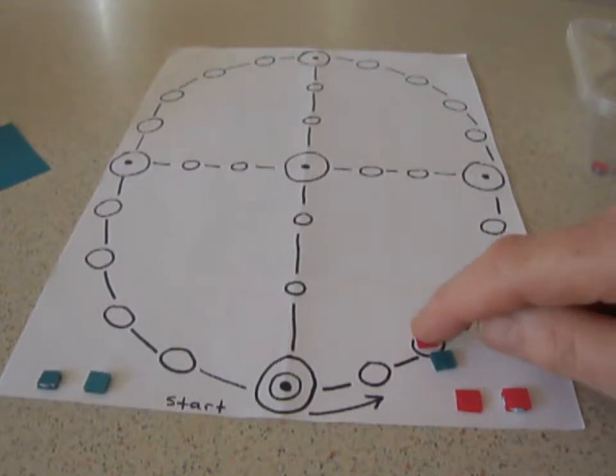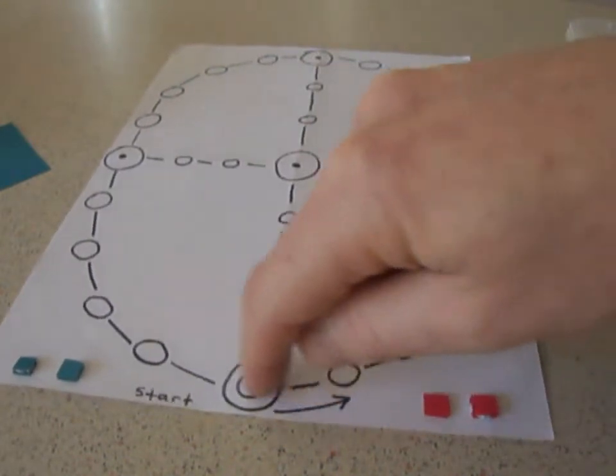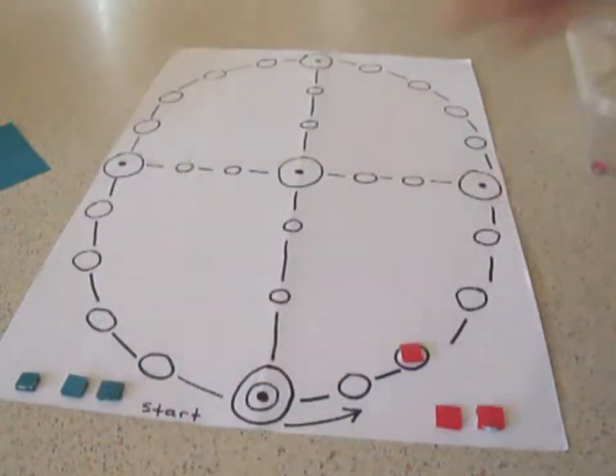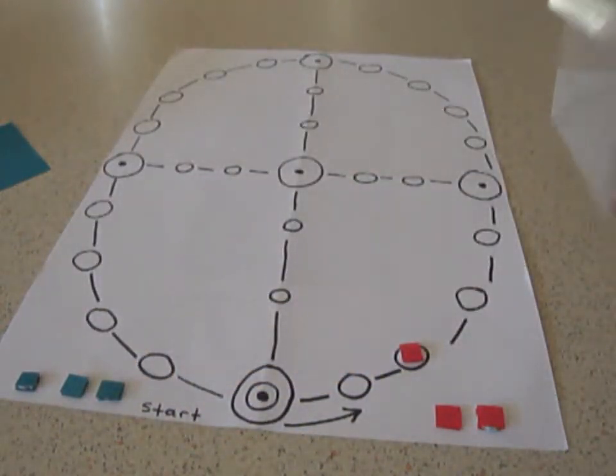So red is allowed to move two spaces as well, one piece two spaces: one, two. And when red ends up on the same space as their opponent blue, they put their piece back to the start. So that's one of the rules of the game.